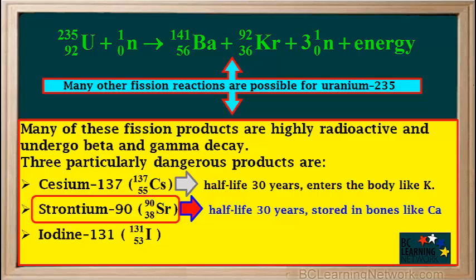Strontium-90 also has a half-life of about 30 years, so it's also radioactive for a long time. It's a group 2 element like calcium, so it enters the body like calcium and gets stored in the bones. It stays in the body much longer than cesium-137.